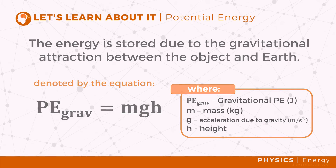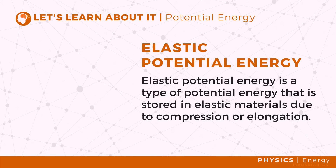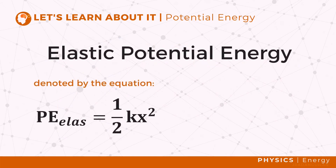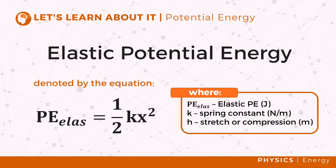Another form of potential energy is the elastic potential energy. This form of energy is stored in a spring or any elastic material. Just as we can store energy by increasing height, we can store energy in a spring by stretching or compressing it. It is denoted by the equation PeLs equals one-half kx squared, where PeLs is the elastic energy, k is the spring constant which depends on the elastic property of the material, and x is the stretch or compression distance from the equilibrium position.